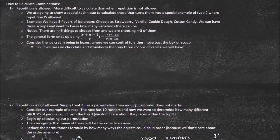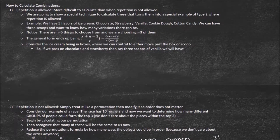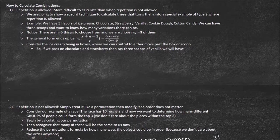Now the harder situation: combinations where repetition is allowed. We'll use a special technique that actually turns the problem into a type-two (no repetition) combination. We have five flavors of ice cream — chocolate, strawberry, vanilla, cookie dough, and cotton candy — and three scoops. So n equals 5 things to choose from, we're choosing 3, and repetition is allowed. I can have two scoops of chocolate or three scoops of chocolate — whatever I want with three scoops.